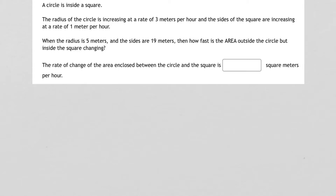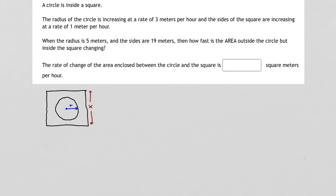This is a wonderful geometry problem that we can apply related rates to. Let's start by drawing a diagram to see exactly what's going on. So we have a circle sitting inside a square. The circle has a radius that's increasing, and the square also has sides that are increasing. Because the radius and the sides of the square are both increasing, I'll put variables on them to designate that they're going to be changing and flexible.